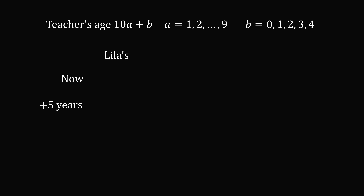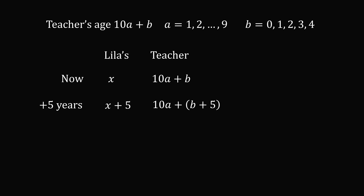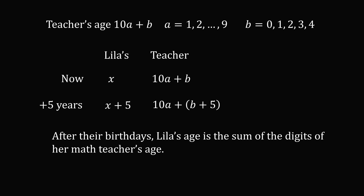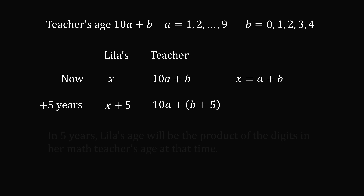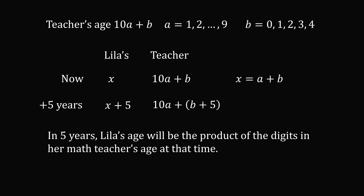Let's say that Leela's age right now is x. In five years time, Leela's age will be x plus 5. Now the teacher's age is 10a plus b; in five years time it will be 10a plus b plus 5. After their birthdays, Leela's age is the sum of the digits of her math teacher's age, so x is equal to a plus b. In five years time, Leela's age will be the product of the digits in her math teacher's age at that time, so x plus 5 is equal to a multiplied by (b plus 5).